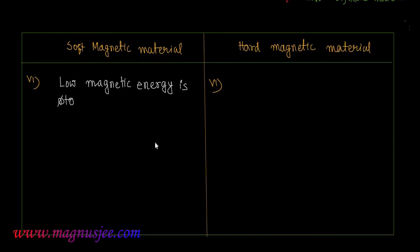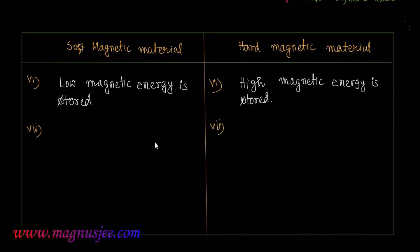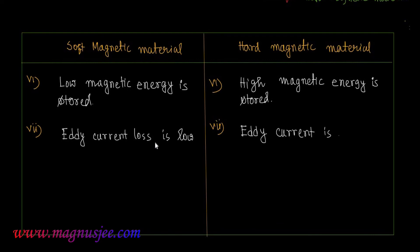Low magnetic energy is stored in soft magnetic material, but high magnetic energy is stored in hard magnetic material. The eddy current loss is low for soft magnetic material, and eddy current loss for hard magnetic material is high.